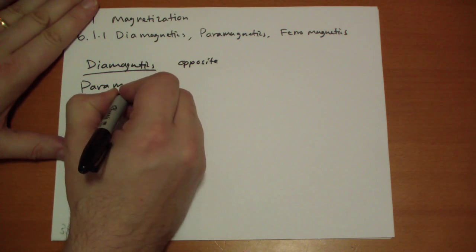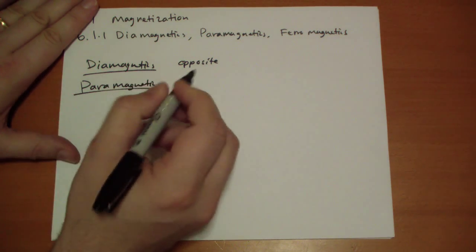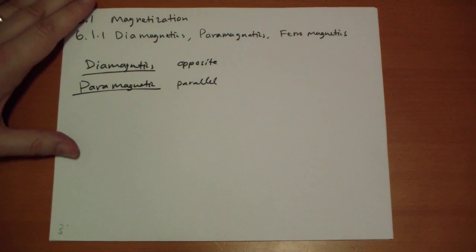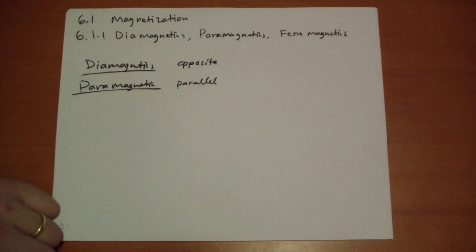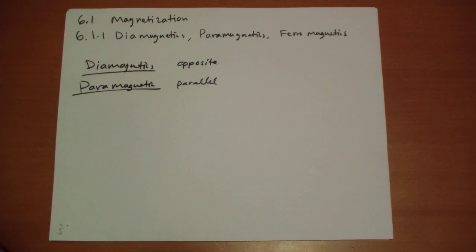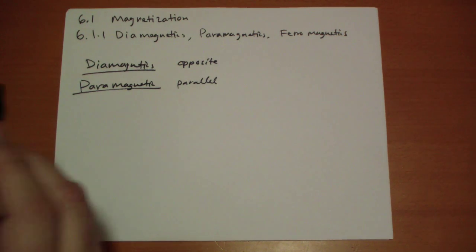Paramagnetics, as its name suggests, like to multiply the magnetic field. They like to add to it with a new magnetic field on the inside that's parallel to the magnetic field it's subjected to.